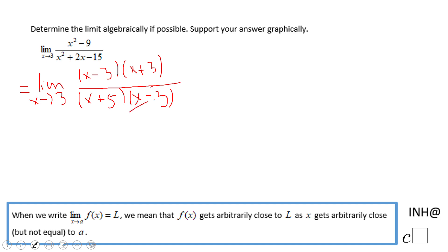And you notice here the x minus 3 is canceled out. That's the reason when you plug in 3 you get that 0 over 0. Now we have a simpler form of the rational expression which is x plus 3 over x plus 5.